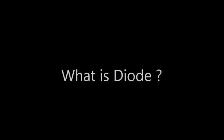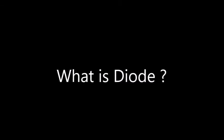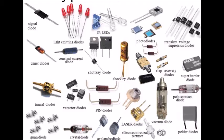What is a diode and how does it work? A diode is a two-terminal electronic component that conducts in one direction. It has low resistance to current in one direction and infinite resistance in the other. A P-N junction diode is made out of a crystal of semiconductor, usually silicon, but germanium and gallium arsenide are also used.